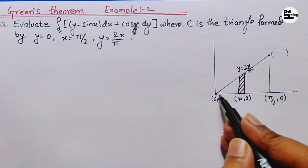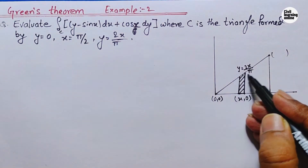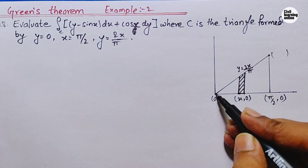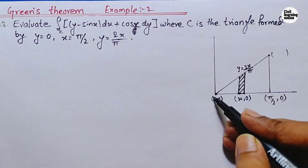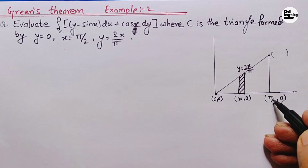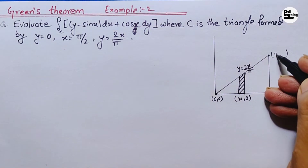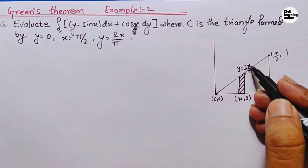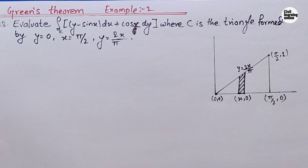As we proceed along this line from the origin, the value of y increases as y equals 2x upon pi. At x equals 0, y is also 0. When we move to x equals pi by 2, we get y equals 1. Now let us rewrite the equation.